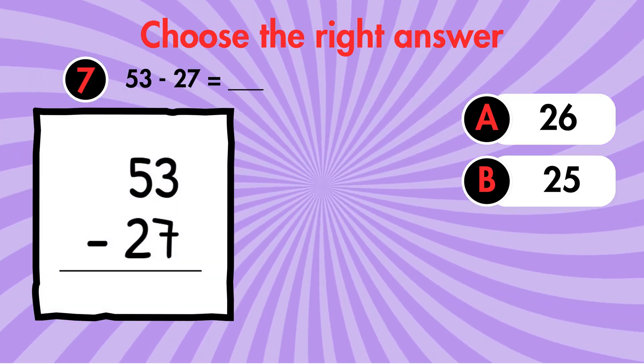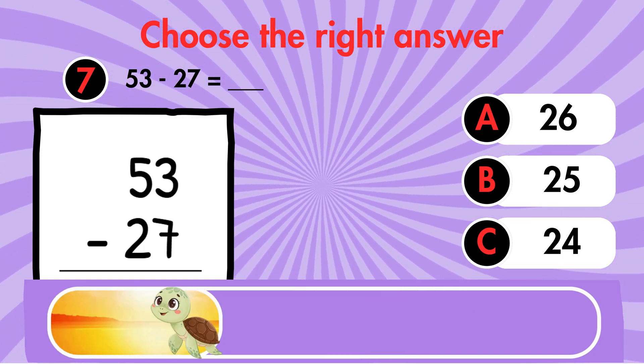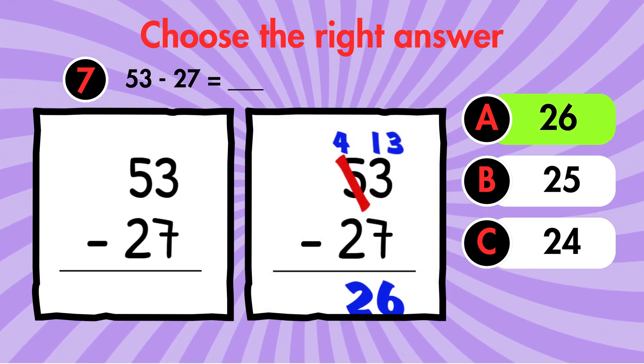Question 7. 53 minus 27 equals what? Answer 26.